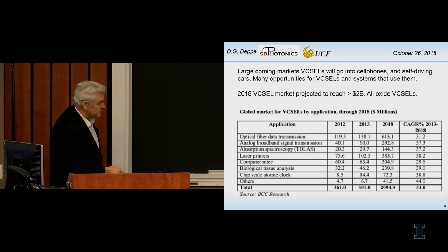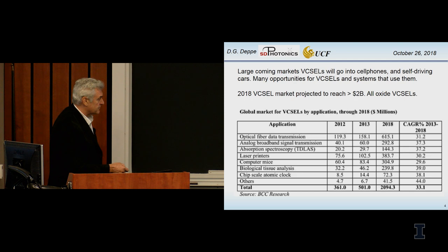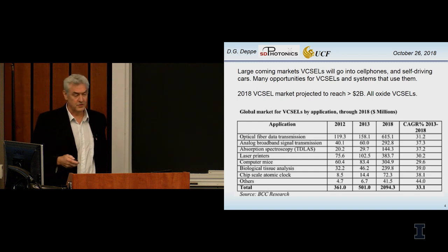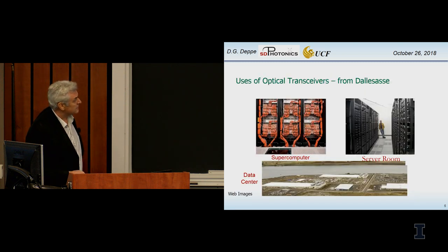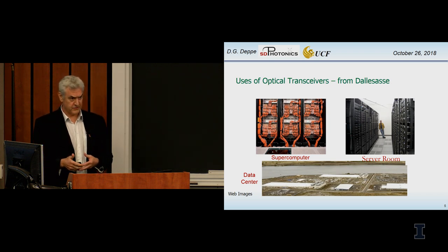This is an old market analysis. If you're familiar with these, quite often they're done to sell the market analysis, so they're overly optimistic. These are probably off by about a factor of two. But what it shows you is what these applications are. Data centers and optical fiber transmission. In computer mice, basically the VCSEL enabled the computer mouse.